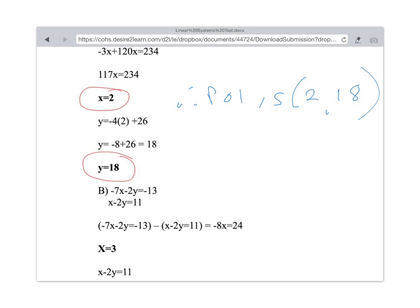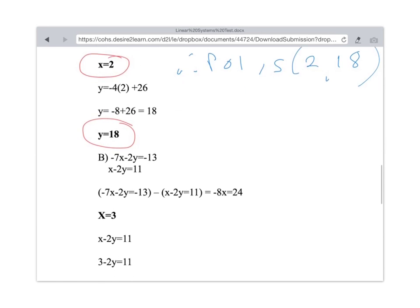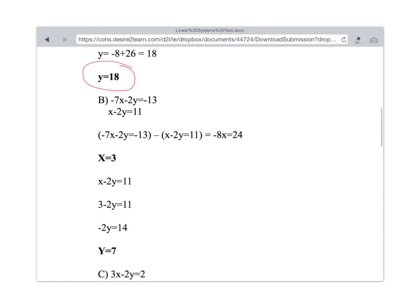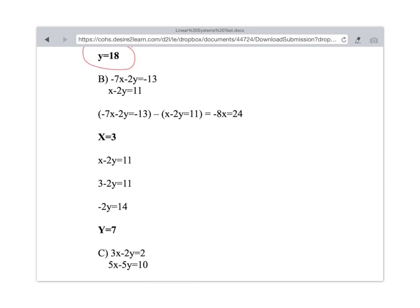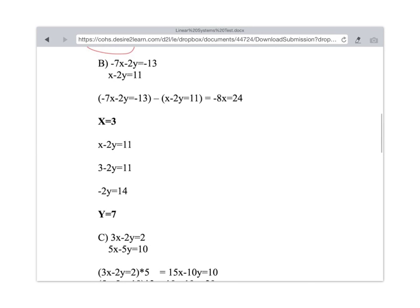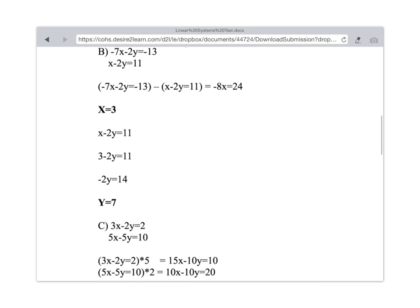So when we're looking at question B, now with question B you're doing this by elimination. You're taking the first equation, equation 1, subtracting equation 2 from it, and then solving for both x and y. And so you've got x equals 3, y equals 7.